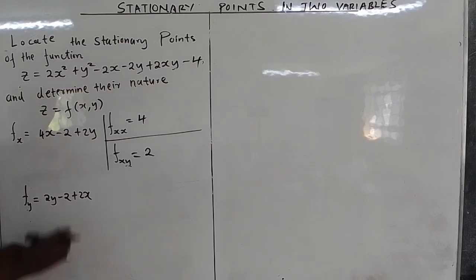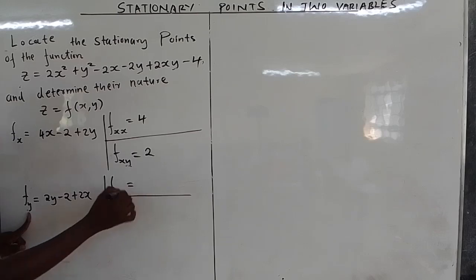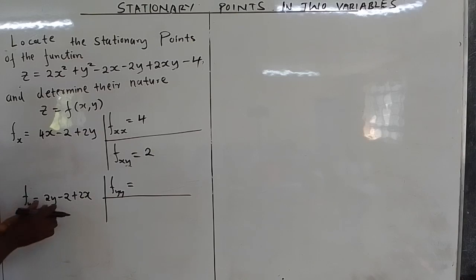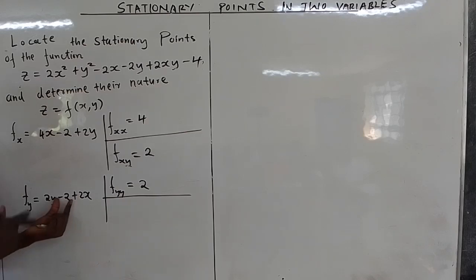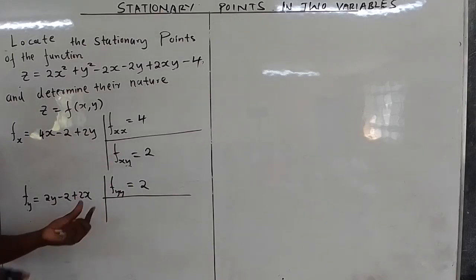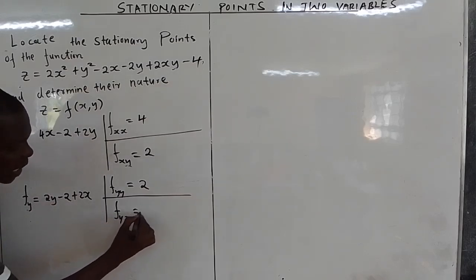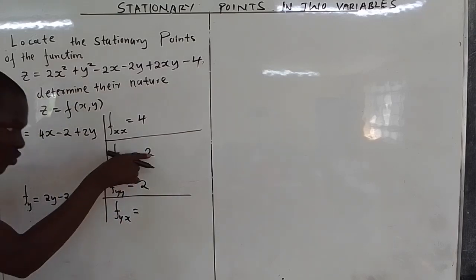If you differentiate the constant negative 4 you get 0. So ∂z/∂y equals negative 2 plus 2x. Now for the second partial with respect to y again: 2y gives 2, negative 2 is a constant giving 0, and 2x is a constant giving 0. So ∂²z/∂y² equals 2. Then the mixed partial, starting with y then differentiating with respect to x: 2y is a constant giving 0, negative 2 is a constant giving 0, and differentiating 2x with respect to x gives 2. So ∂²z/∂y∂x equals 2.